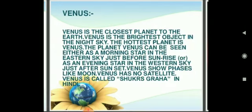Venus is the brightest planet in the night sky after the moon. Since it is close to the sun like Mercury, it can be seen just before sunrise and just after sunset. Venus is also called the morning and evening star. Like Mercury, Venus has no satellite. The rotation of Venus on its axis is somewhat unusual — it rotates from east to west, while other planets rotate from west to east.